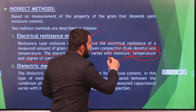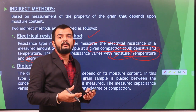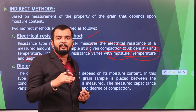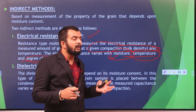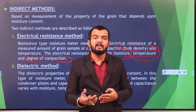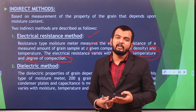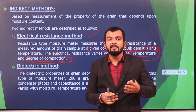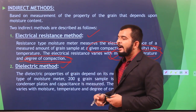With higher moisture content in a similar sample, the resistance value will be lower. Based on this difference in resistance, you can find out the moisture content of an unknown sample by comparing its resistance to known reference values.